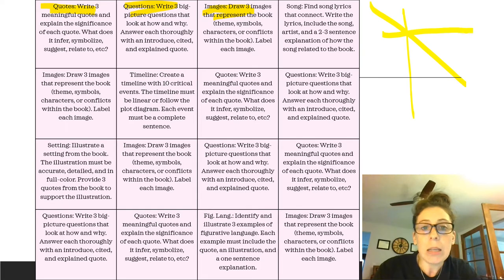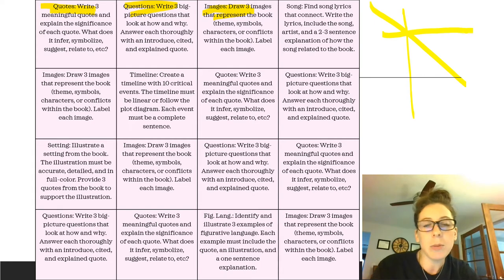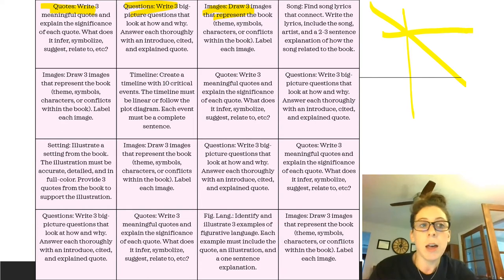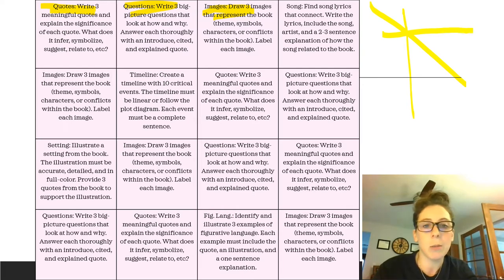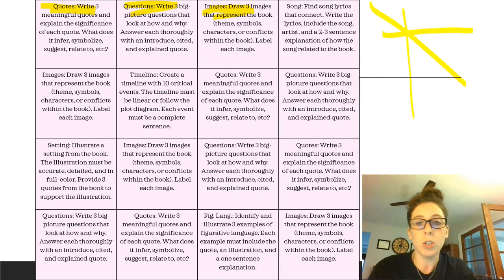The last universal element is images — everyone includes three images that represent the book in some way, and those images need to be labeled. Think about different themes, characters, or conflicts. There are actually more options for images than you might expect. For my book 'The Oath,' which was very metaphysical and mystical, I thought about themes and conflicts and came up with images I'm pleased with.